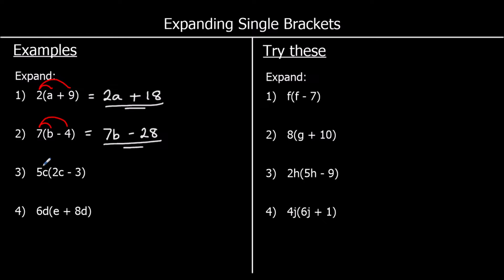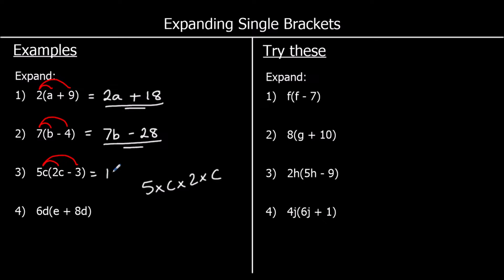In the third one we've got 5c times 2c, and 5c times a negative 3. 5c times 2c means 5 times c times 2 times c, so that's 5 times 2 times c times c. We can do 5 times 2 first, which is 10. And we've got 10 times c times c — c times c is c squared. So it's 10c squared.